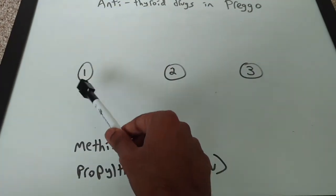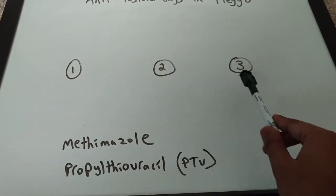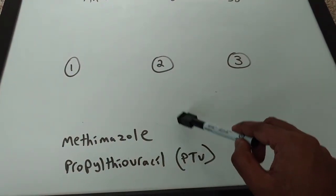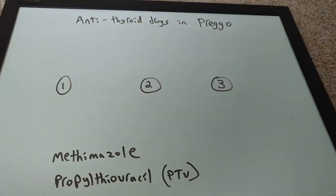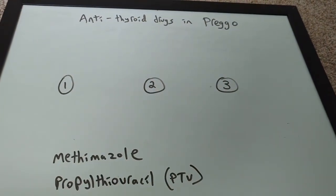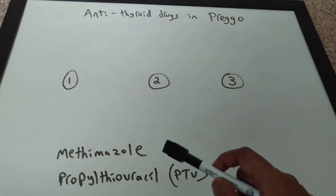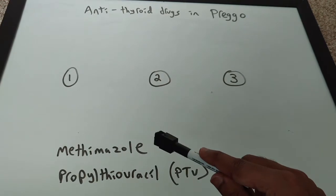PTU in the first trimester, but for second and third trimester you give methamazole. That's where the questions trick you up. PTU is safe in pregnancy, and methamazole is a first trimester teratogen only, so you can give it in the second and third trimester.